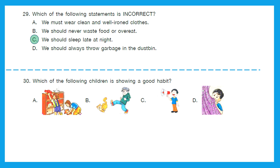Question 30: Which of the following children is showing a good habit? Option A is keeping toys at the right place. Option B is teasing animals. Option C is using a loudspeaker. Option D is picking the nose. The good habit is shown by the kid in the first option — that is option A.